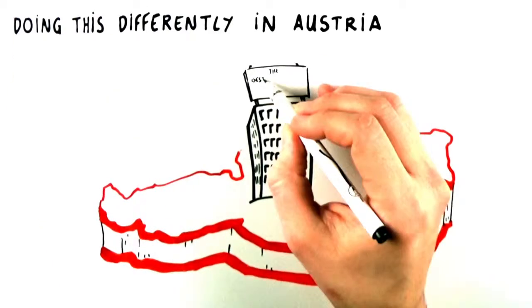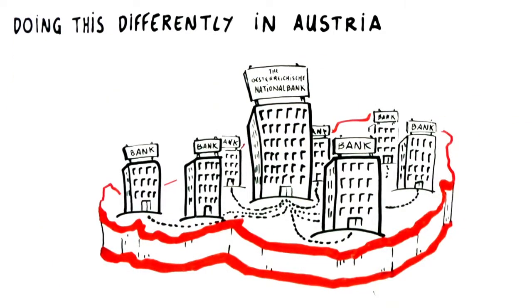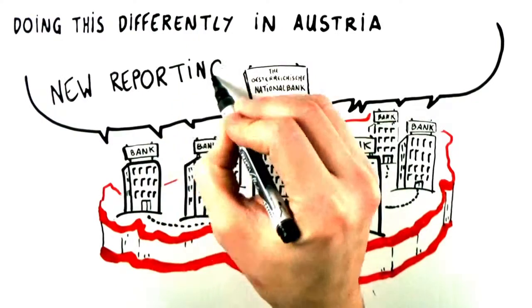In Austria, the central bank, together with the country's banks, have worked to develop a new reporting model.